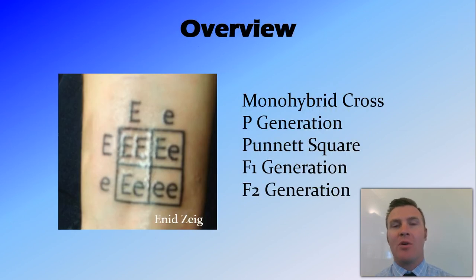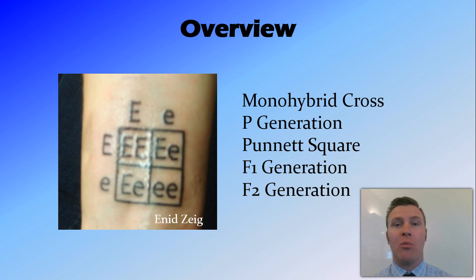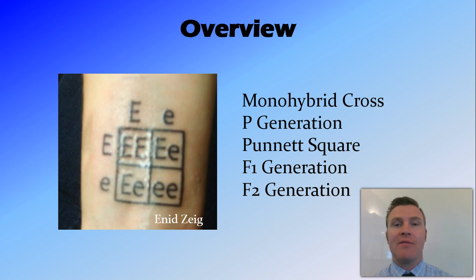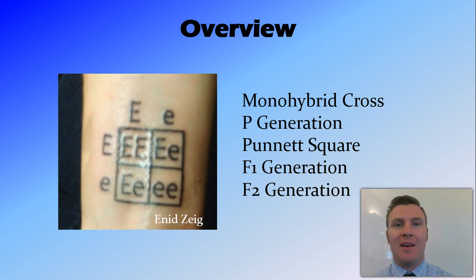In this video we've defined monohybrid crosses as a mating between two individuals where we're studying one trait. We've talked about the P generation — Mendel's P generation were true-bred, so they were homozygous for either purple or white. We've talked about the Punnett square as a tool that geneticists use to work out offspring of a cross. We've looked at the F1 generation — 100% heterozygous purple. And we've looked at the F2 generation, where we get a 3-to-1 ratio: 75% purple and 25% white, with genotype ratios of 25% big B big B, 50% big B little b, and 25% little b little b.